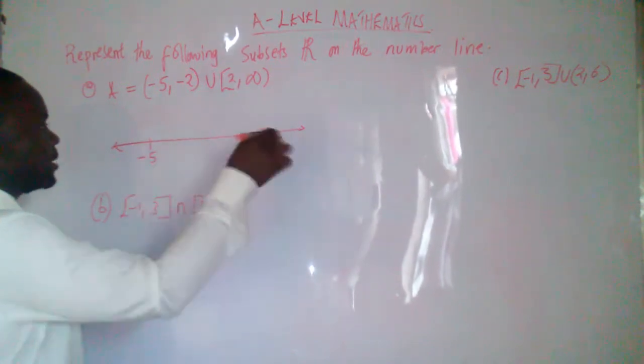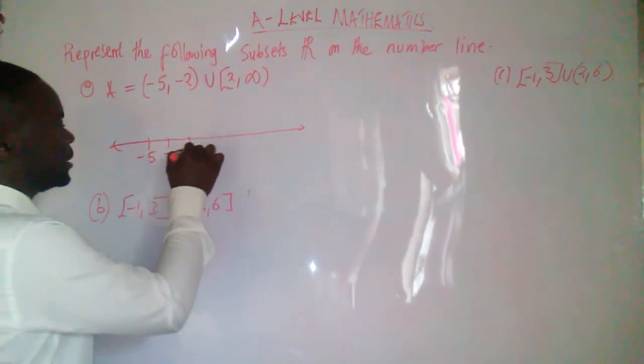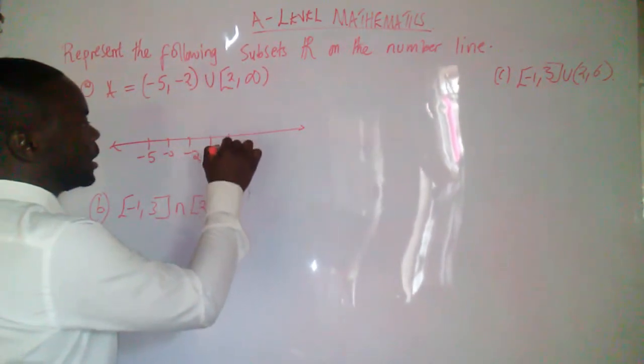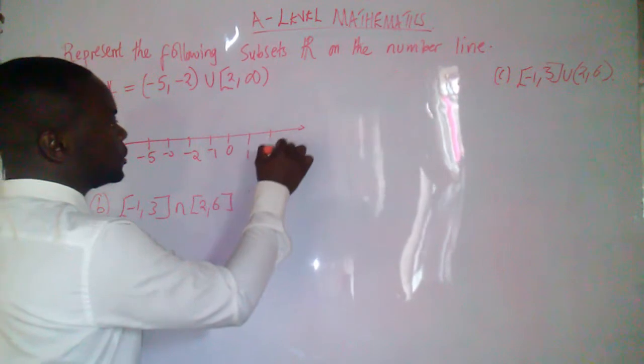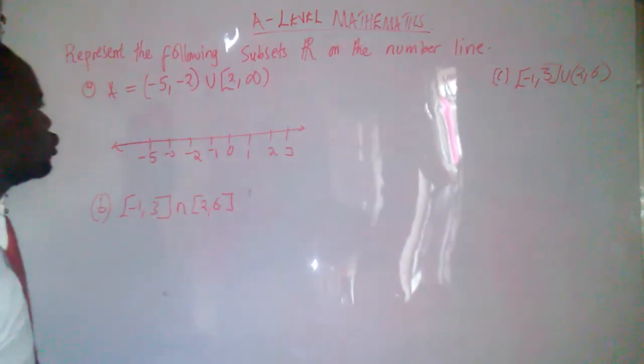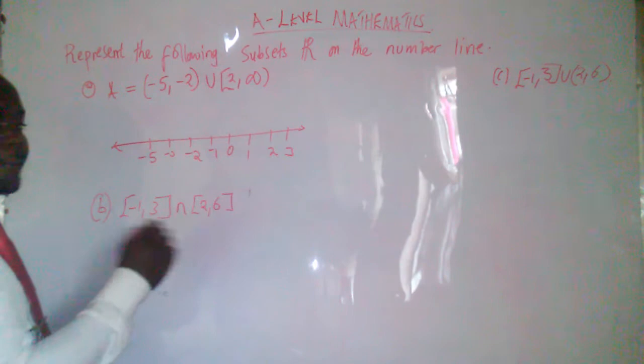It will start at negative 5, go in this side. So negative 3, negative 2, negative 1, 0, 1, 2, 3, go in this side. So we need to represent this on the number line.